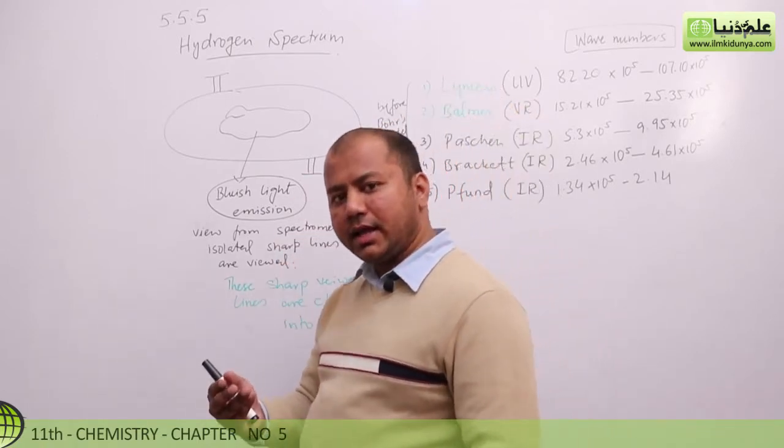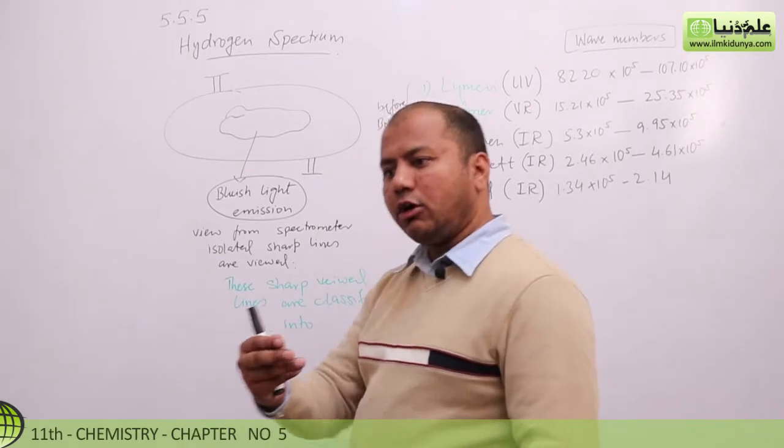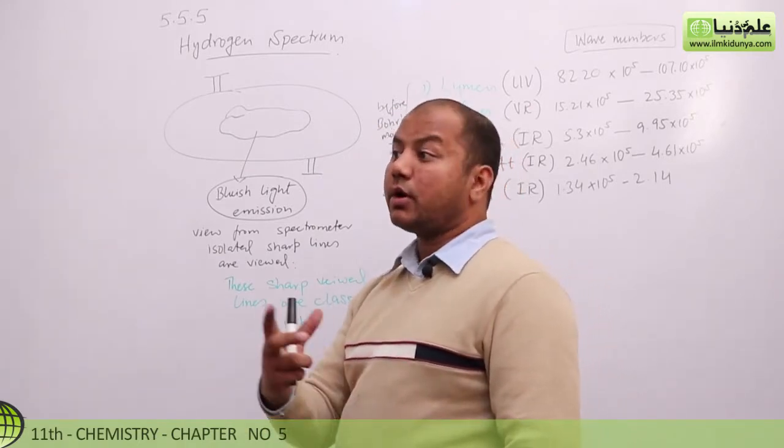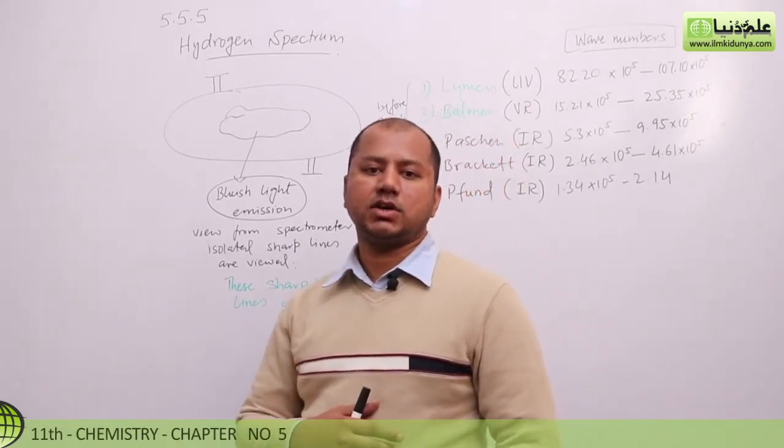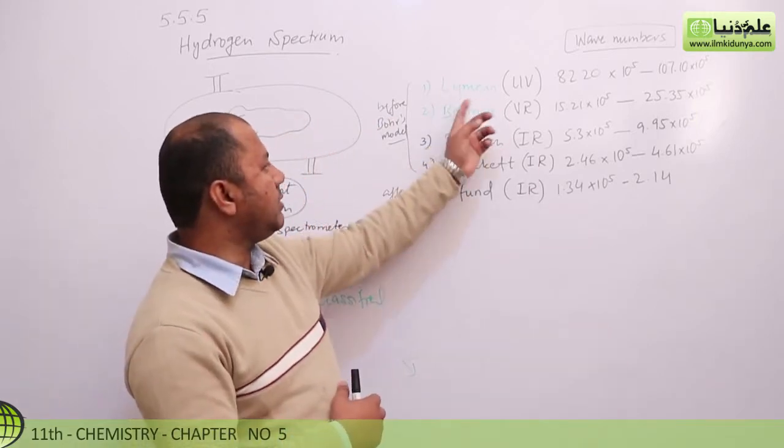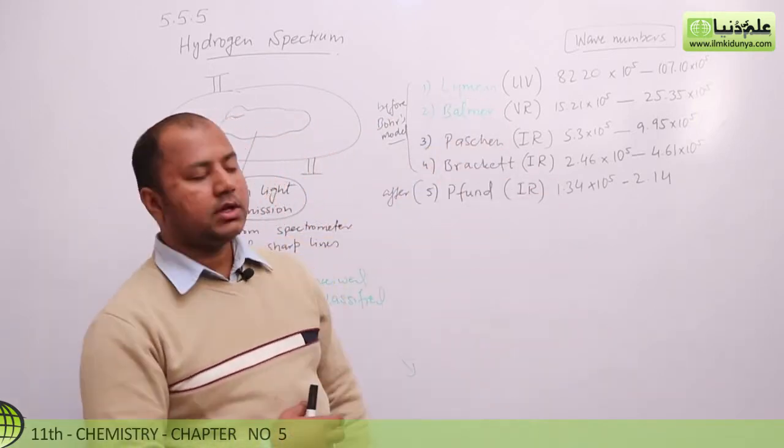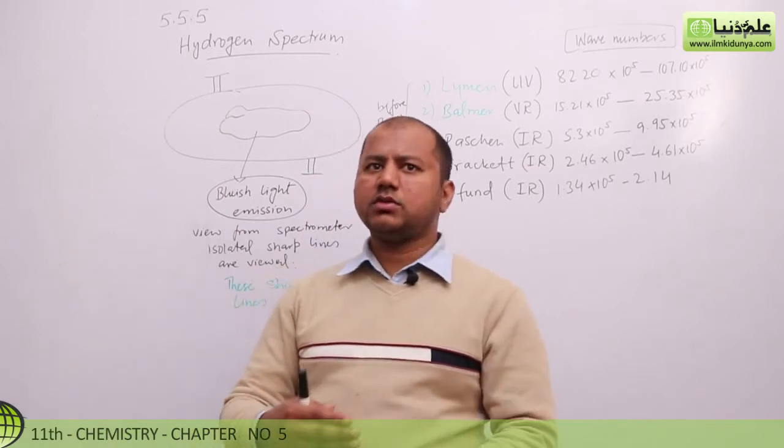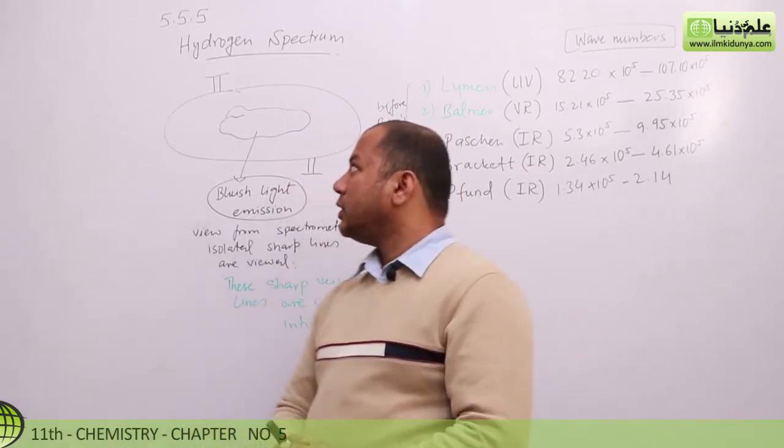Hydrogen spectrum is also the spectrum which can be released. Hydrogen photons can also be released. These models have been discovered before. These four scientists nominated: Lehman, Balmer, Pastran, and Bracket. These scientists have been working on hydrogen spectrum. So we'll talk about this.